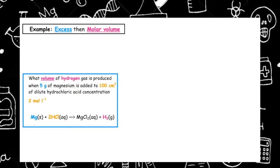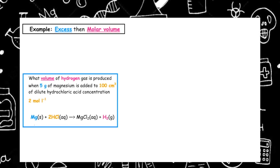What volume of hydrogen gas is produced when 5 grams of magnesium is added to 100 centimetres cubed of dilute hydrochloric acid, concentration 2 moles per litre? The balanced equation is given.